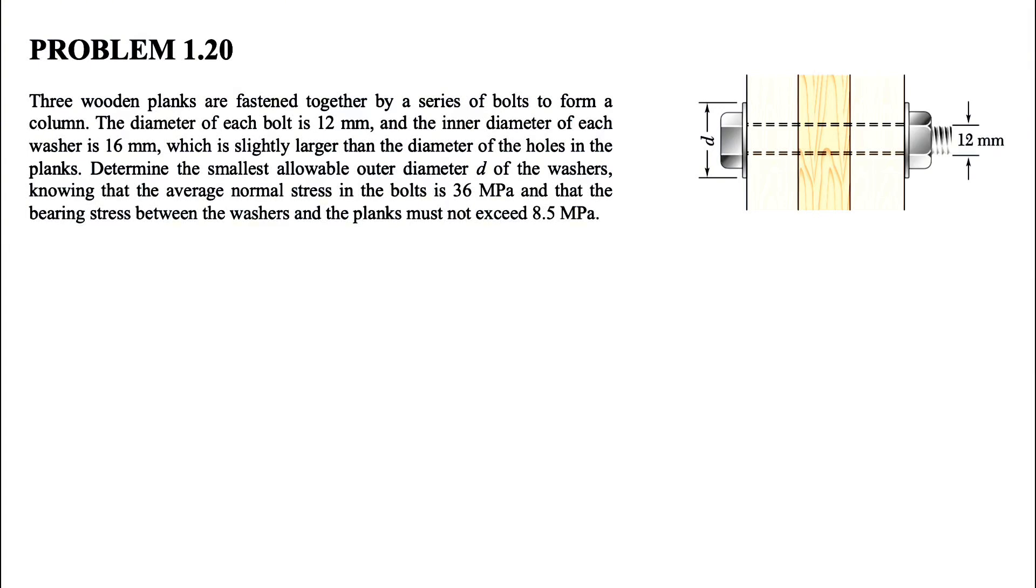Okay, welcome back guys. We're going to be solving a question from the first chapter of the Beer and Johnson Mechanics of Materials. We have question 20 where we have three wooden planks that are fastened together by a series of bolts to form a column.